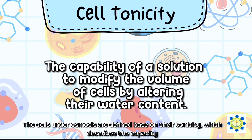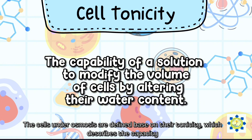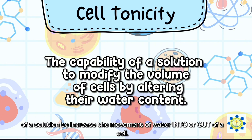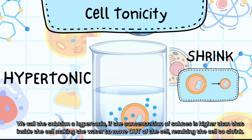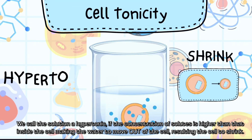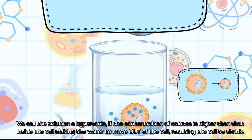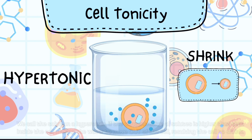Osmosis is defined based on their tonicity, which describes the capacity of a solution to increase the movement of water into or out of the cell. We call the solution hypotonic since the concentration of solutes is higher than that inside the cell, making the water to move out of the cell, resulting the cell to shrink.